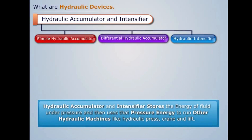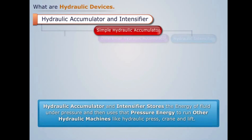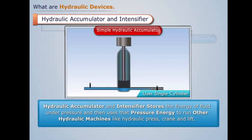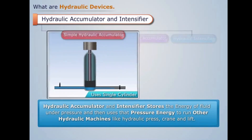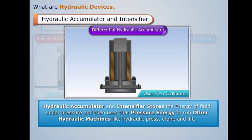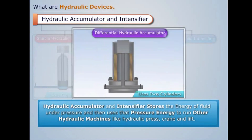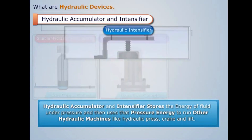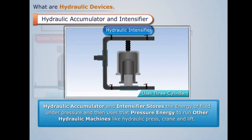Simple hydraulic accumulator uses a single cylinder, whereas differential hydraulic accumulator uses two cylinders, and hydraulic intensifier uses three cylinders.